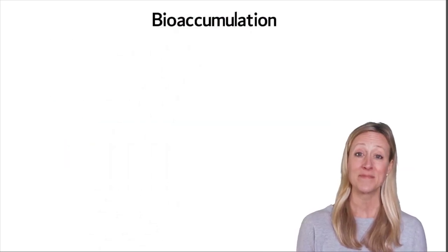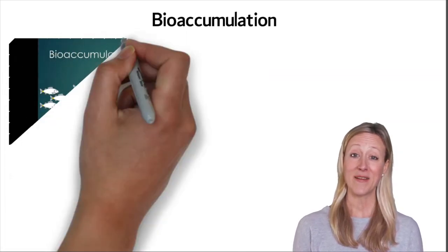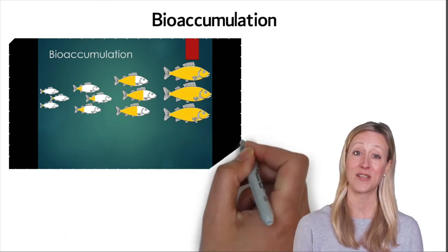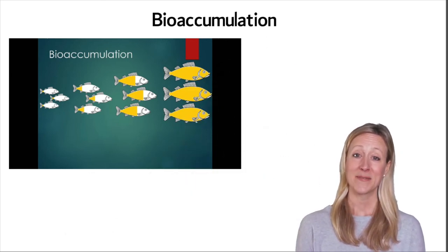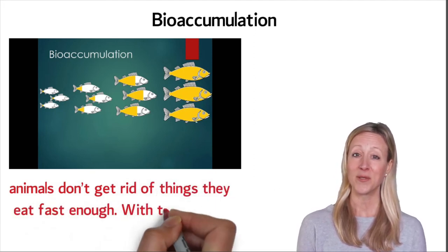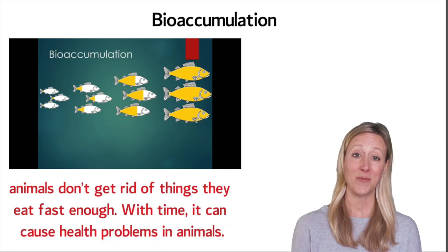Bioaccumulation. Metal particles can build up in the bodies of animals that eat the plants. This process is called bioaccumulation. It happens because animals don't get rid of things they eat fast enough. With time, it can cause health problems in animals.